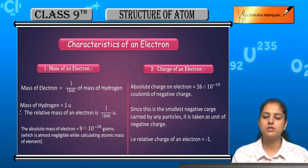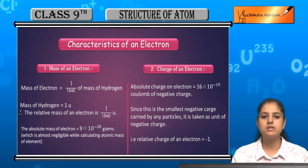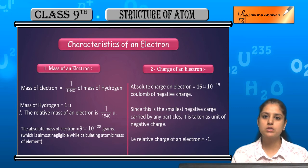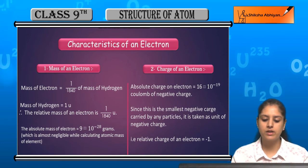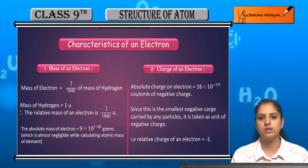And the absolute mass, which is almost negligible while calculating atomic mass of element. Because you can see, minus 28 is a very small amount, so it is almost negligible.